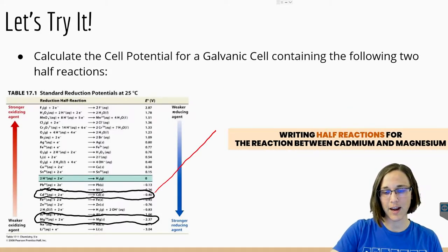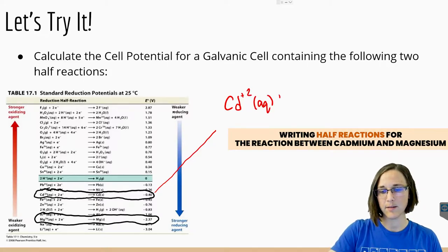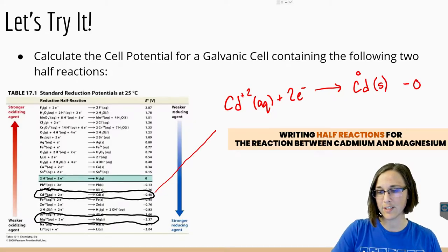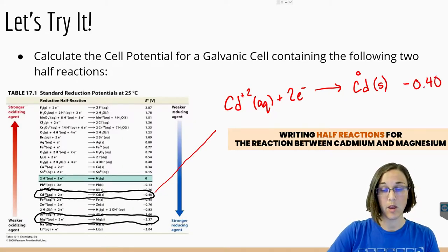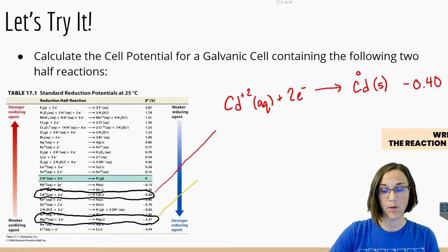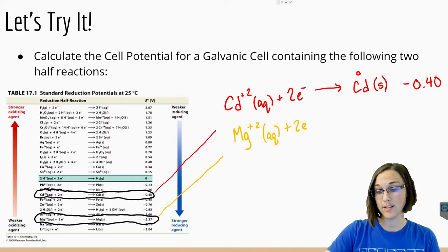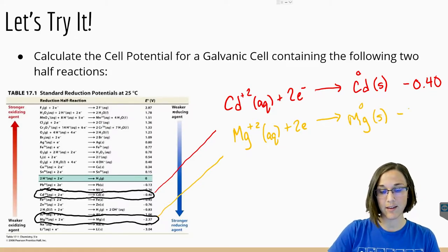For cadmium, we're going to write out its half reaction: Cd²⁺ aqueous plus two electrons forms Cd with no charge, solid. And the value associated with that is negative 0.40. Whereas for magnesium, we have Mg²⁺ aqueous plus two electrons to form magnesium solid, with a value of negative 2.37 volts.